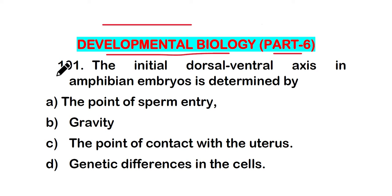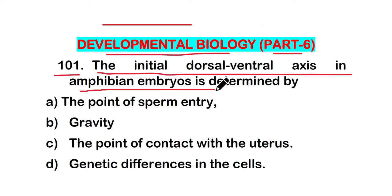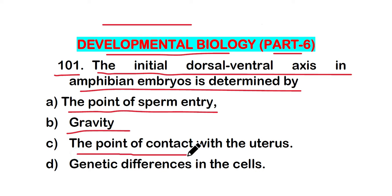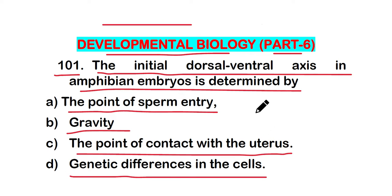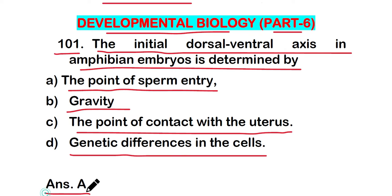Question 101: The initial dorsal-ventral axis in amphibian embryos is determined by: (a) the point of sperm entry, (b) gravity, (c) the point of contact with the uterus, or (d) genetic differences in the cells. The correct answer is option A — it is determined by the point of sperm entry.